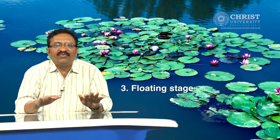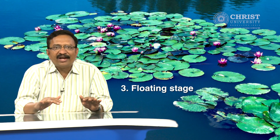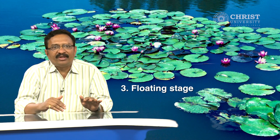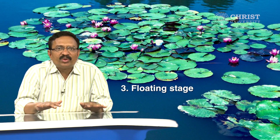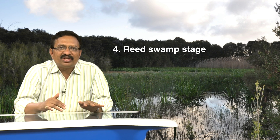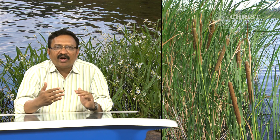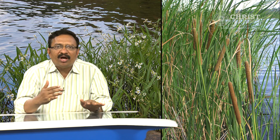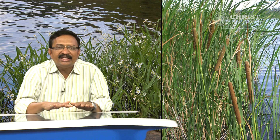The third stage is the floating stage. The area is invaded by species of floating-leaved anchored plants like Nymphaea. These plants make the water rich in mineral and organic matter. Rapid growth of these plants shallows the water level on the periphery. The fourth stage is the reed swamp stage. Amphibious plants like Typha and Sagittaria replace the floating plants. These plants produce abundant organic matter and transpire huge amounts of water. They build up a shore by depositing sedimentary materials and humus, changing the substratum to a marshy soil.